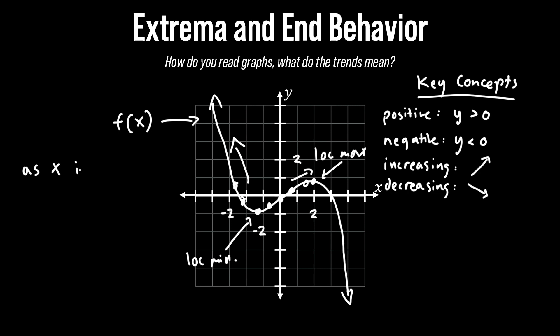As x increases y goes to negative infinity. And as x decreases which means we go to the left y goes to positive infinity. So this would be the end behavior.